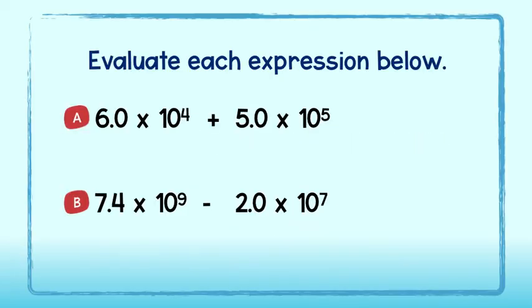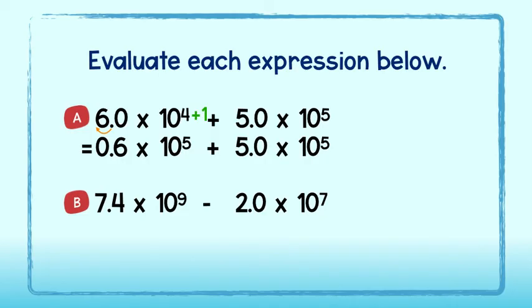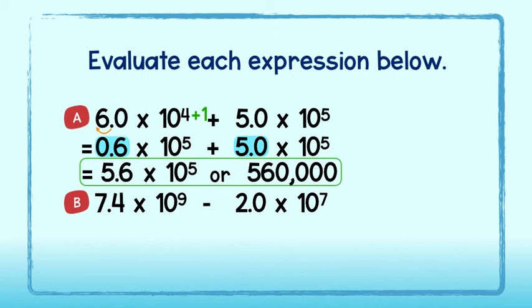Ok, your turn. Evaluate each expression below — be sure to pause this video to give yourself some time to work. For part A, we must get the powers of 10 to be the same. I will add 1 power of 10 to get 10 to the fifth power, then manipulate the first factor by moving the decimal point one space to the left to get 0.6. Copy down the rest of the problem — the powers of 10 are now the same. 0.6 plus 5 equals 5.6, and we multiply by the common power of 10, or 10 to the fifth. This is our answer in scientific notation, or 560,000 in standard notation.